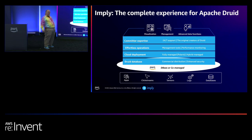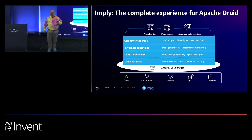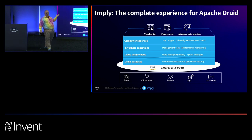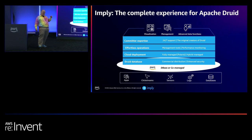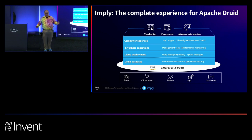Finally, support. Druid has maybe the best support in open source — there's a very active Druid Slack where the average response to an open-source help request is about 20 minutes. But that's still open source: if it goes down, you're hoping somebody will help you. If you're paying Imply, there are people who are paid to help you — 24/7 support, including access up to the original creators for tough problems.